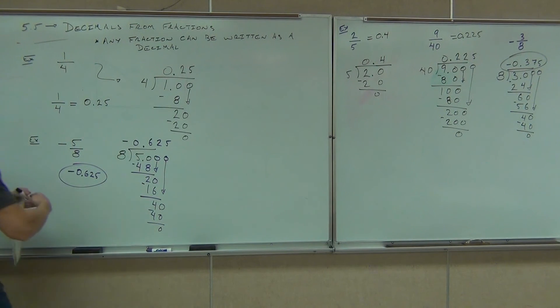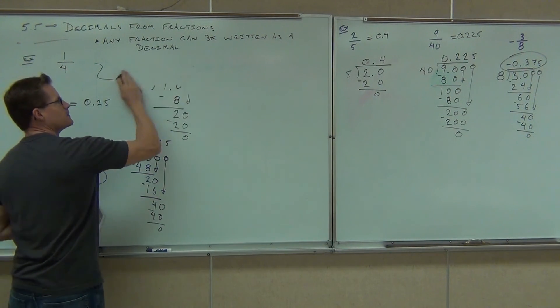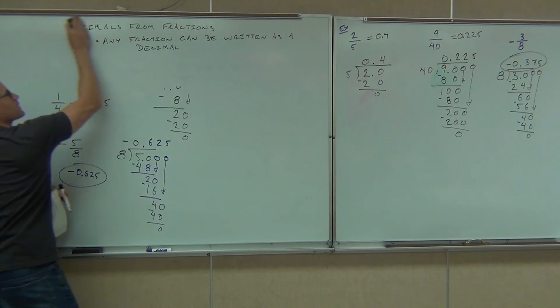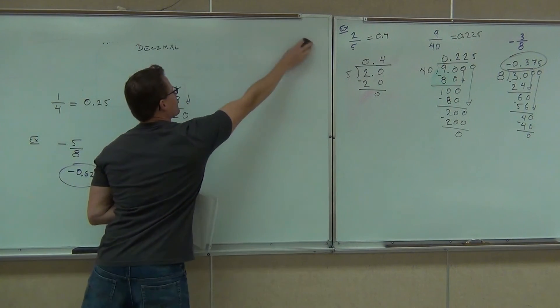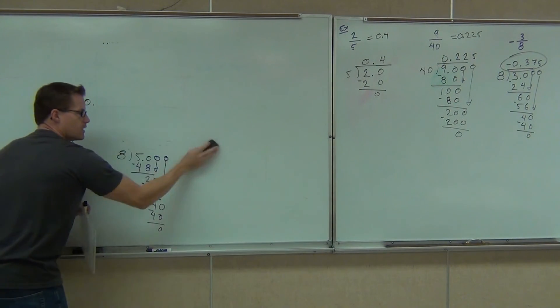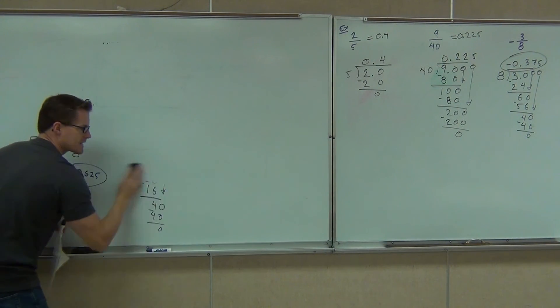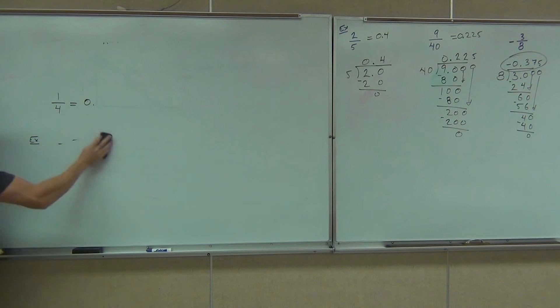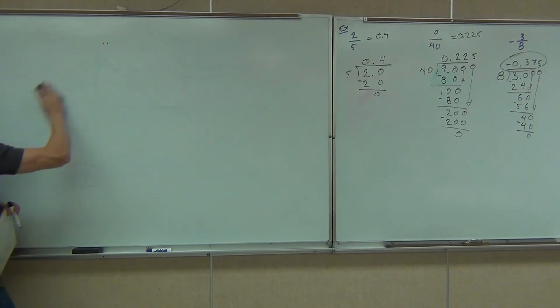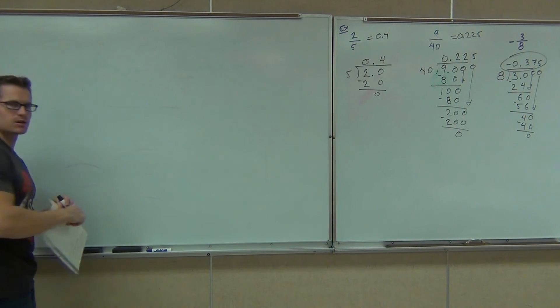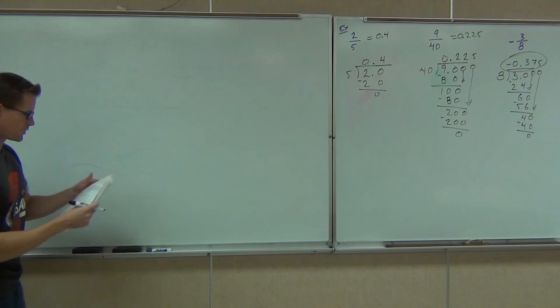So we know the idea — we put our numerator on the inside of our division symbol, we put our denominator on the outside. We make sure we've got a decimal there. We add some zeros. We keep adding zeros and keep going until we get a remainder of zero.